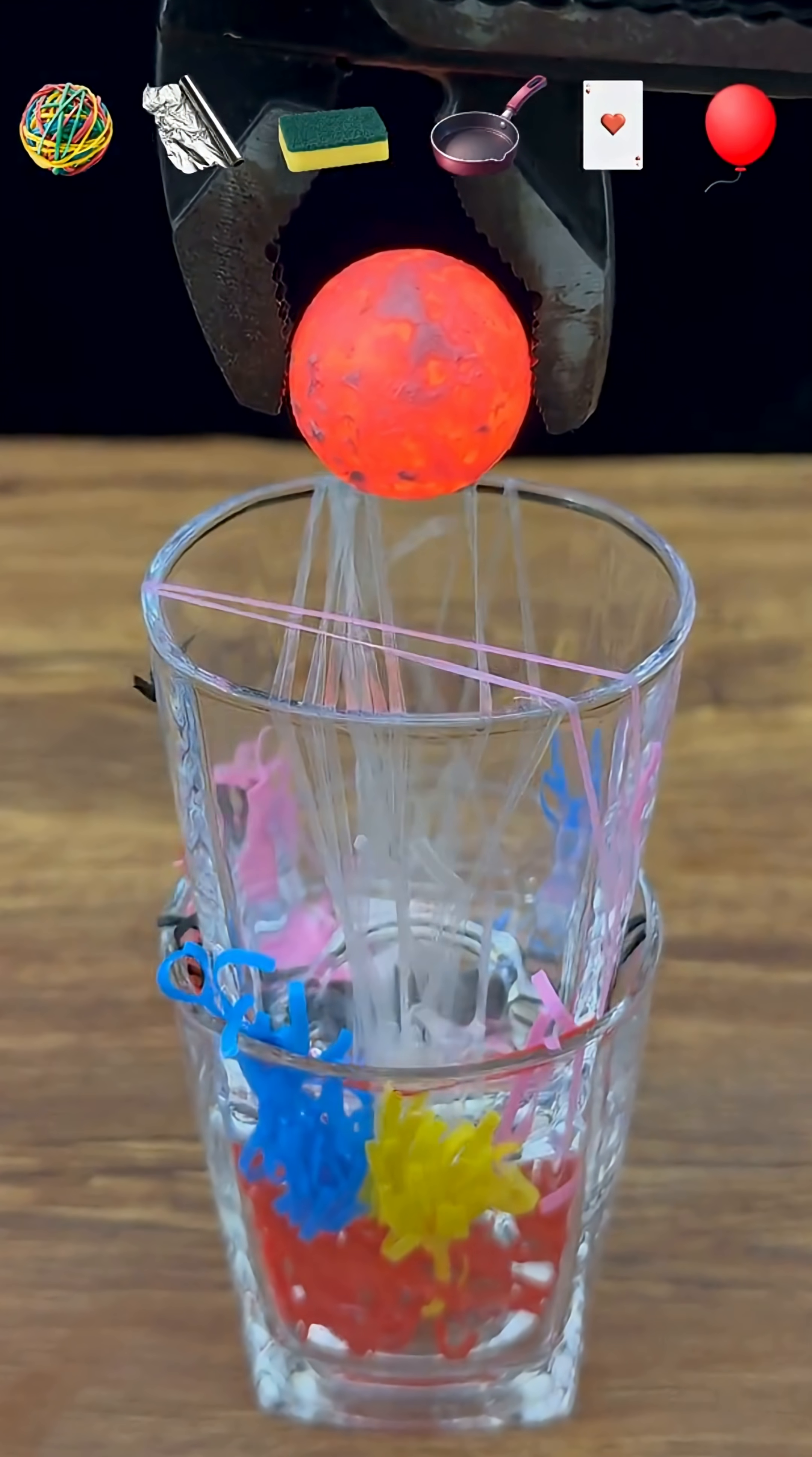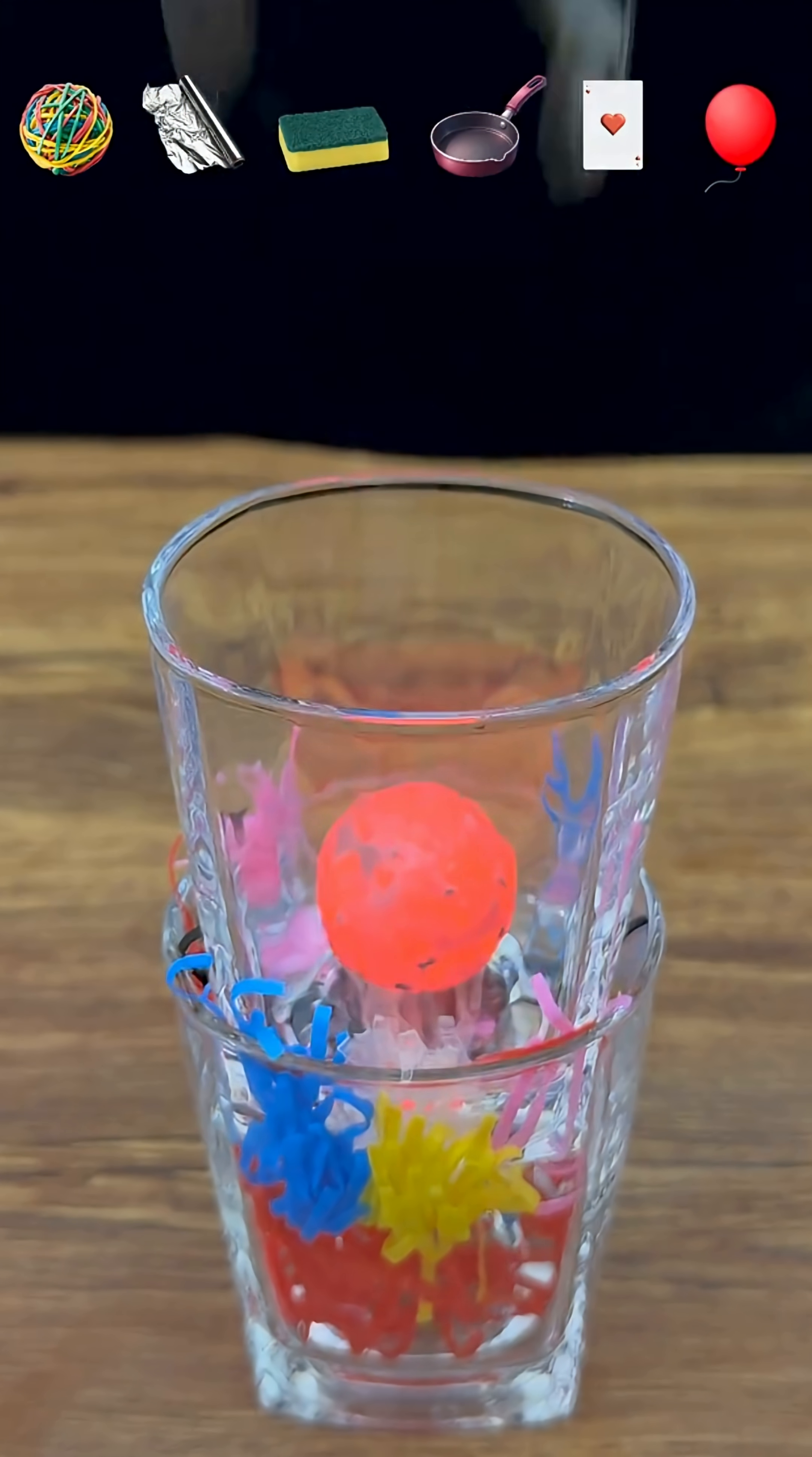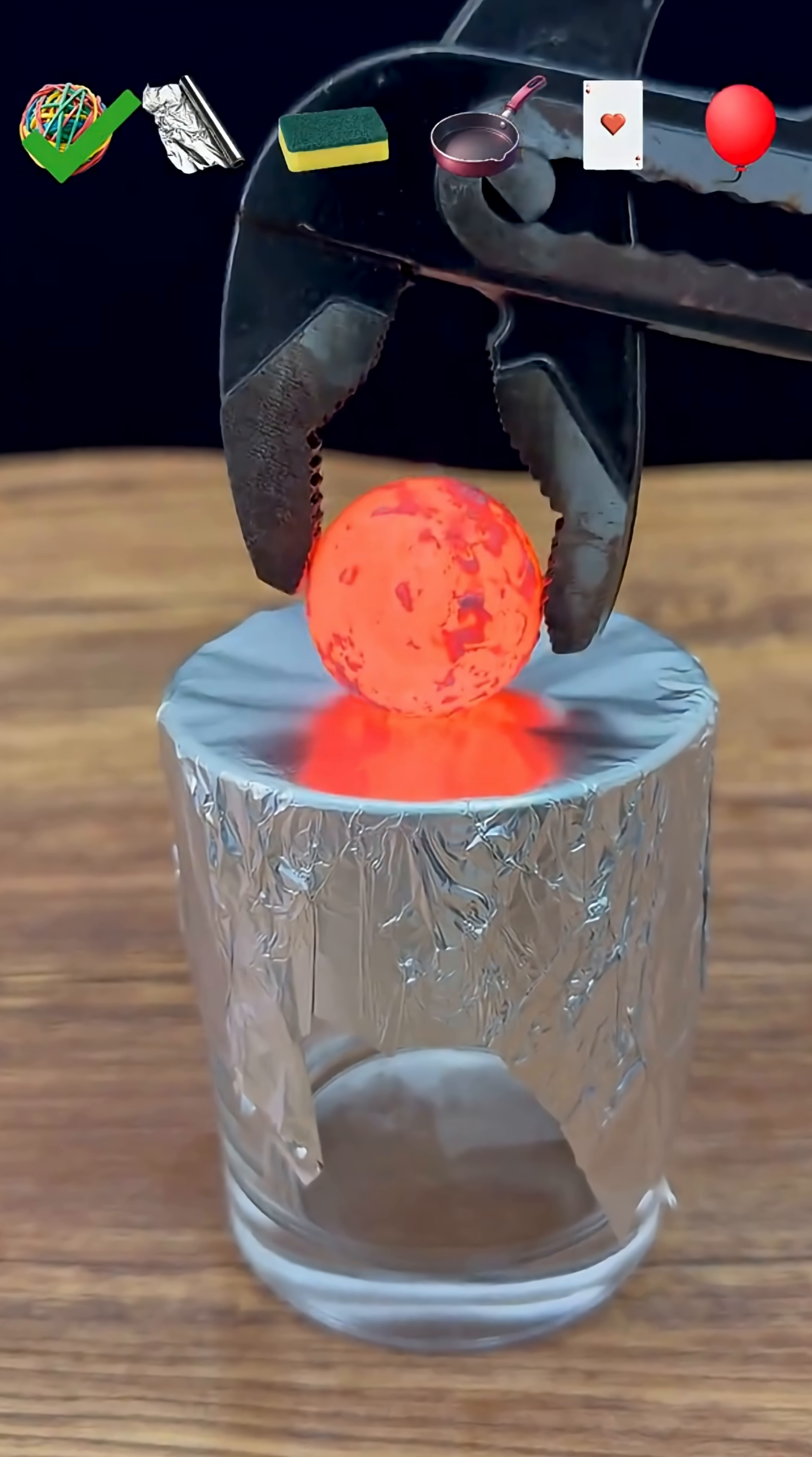Instantly, the high heat causes the rubber bands to snap, melt, and shrivel. They lose all their structure, falling apart as the ball drops through.